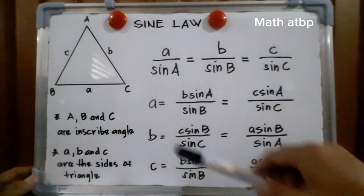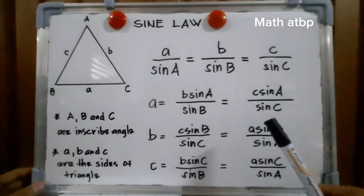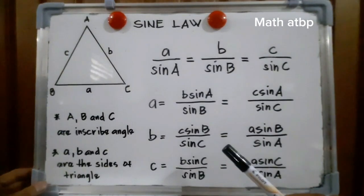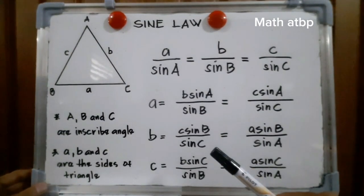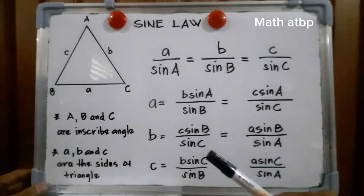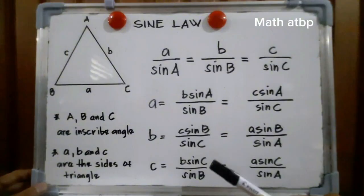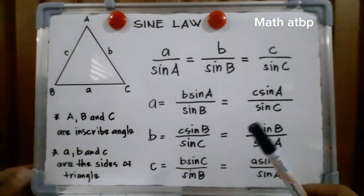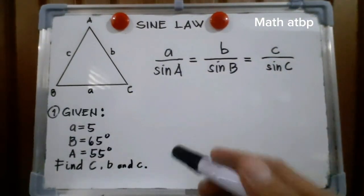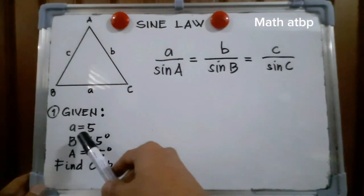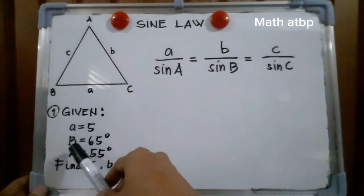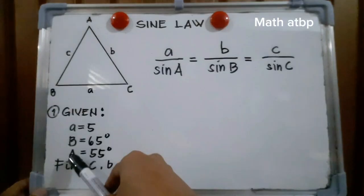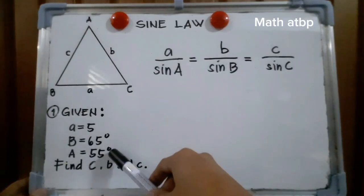These are the formulas we're going to use in solving the sides and angles of a triangle where there is no 90-degree angle involved. For example number 1, given: side A is equal to 5, angle B is equal to 65 degrees, and angle A is equal to 55 degrees.